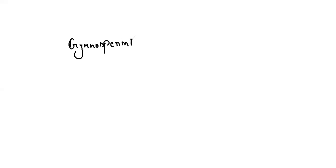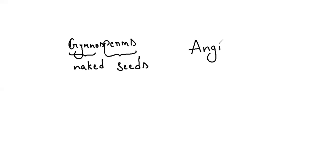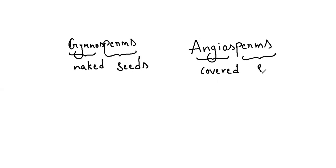Let's start about gymnosperms. Gymnosperms — 'gymno' means naked and 'sperms' means seeds, so naked seeds. In this video we are also going to see about angiosperms. Angiosperms means covered seeds. Both these plants are called vascular plants — vascular phanerogams. Phanerogams means seeded plants. Gymnosperms are popularly called naked vascular plants, and angiosperms are popularly called covered seed plants.